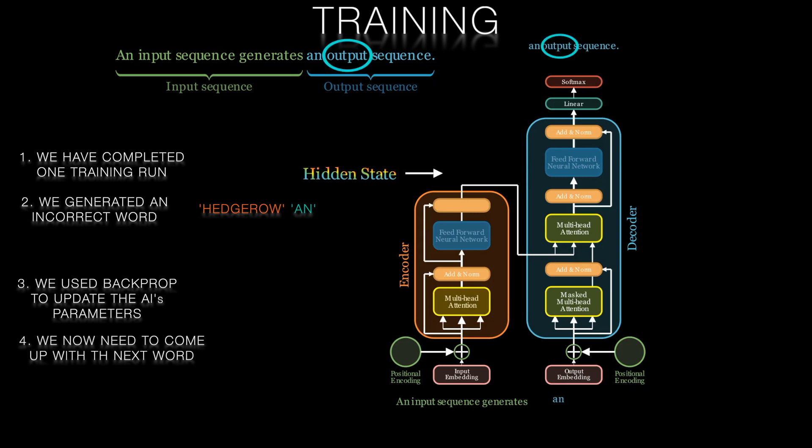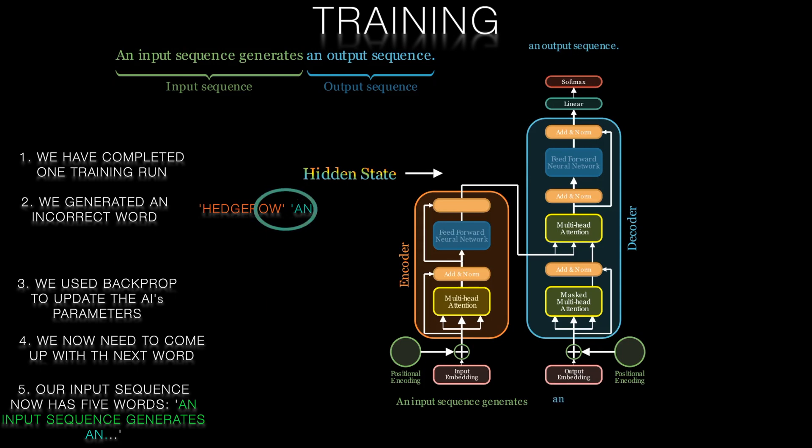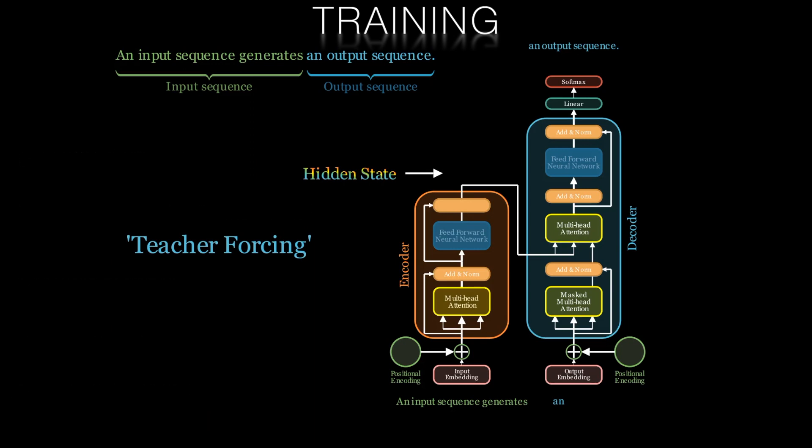And now we have the next word to predict in our sequence. The next word we want to correctly predict is 'output,' and our input sequence is one word longer. In order to train the network sensibly, we won't use the incorrectly predicted word 'hedgerow.' Instead we'll use the correct word 'an.' This is called teacher forcing. This means that during training, the model uses the true output sequence as an input for each time step instead of its own incorrect prediction.